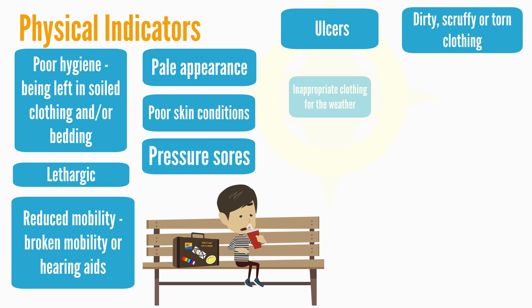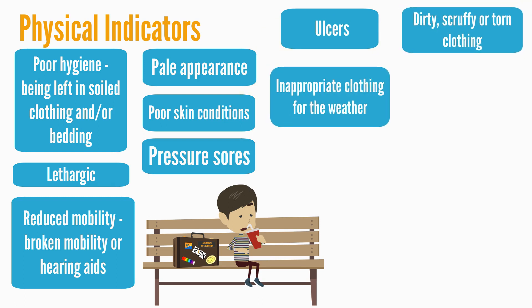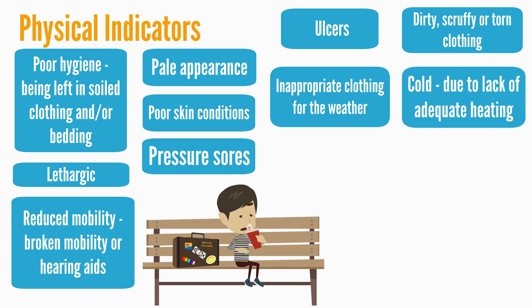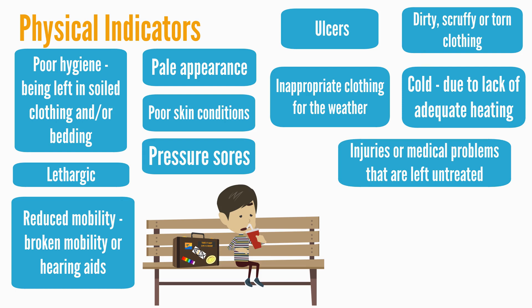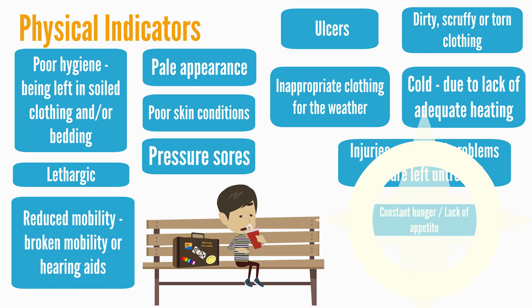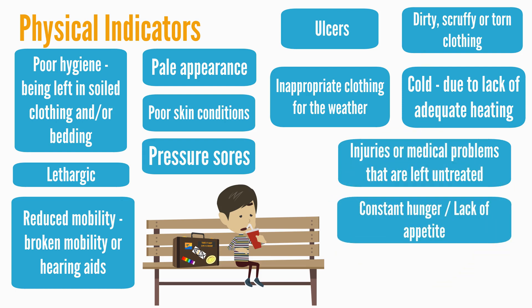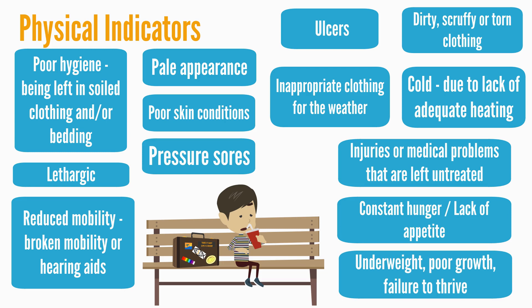Additional physical indicators include dirty, scruffy or torn clothing, inappropriate clothing for the weather, cold due to lack of adequate heating, injuries, medical problems that are left untreated, constant hunger, lack of appetite, underweight, poor growth, and failure to thrive.